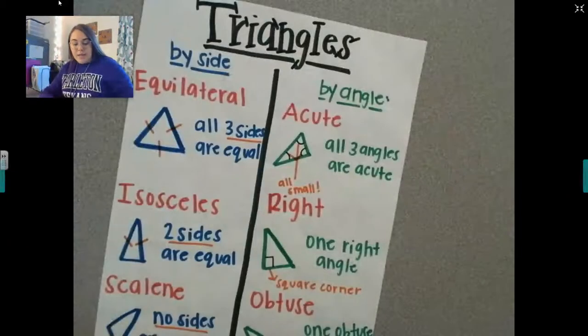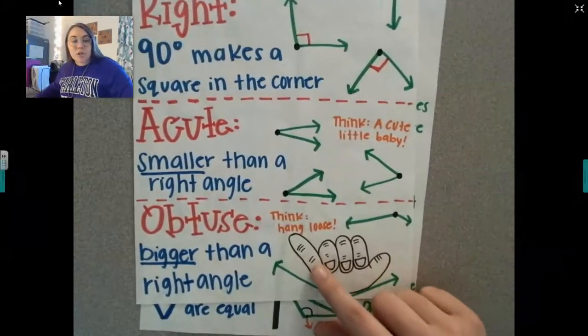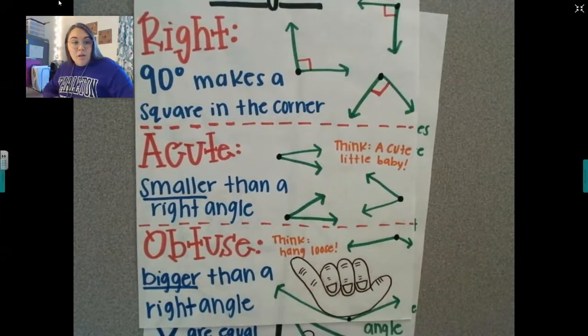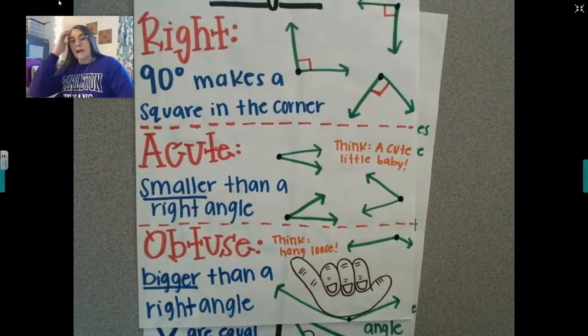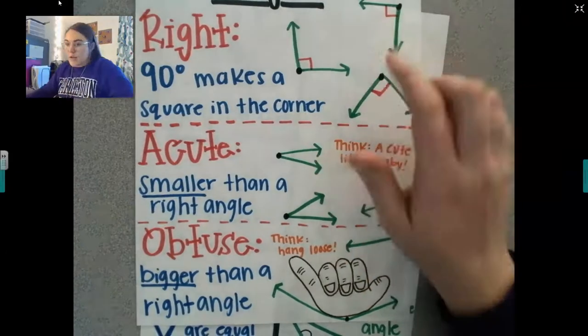So remember, obtuse is when it is bigger than a right angle. It's larger than 90 degrees. Acute is smaller than 90 degrees, smaller than a right angle. And a right angle makes 90 degrees. It's like an L on your hand.